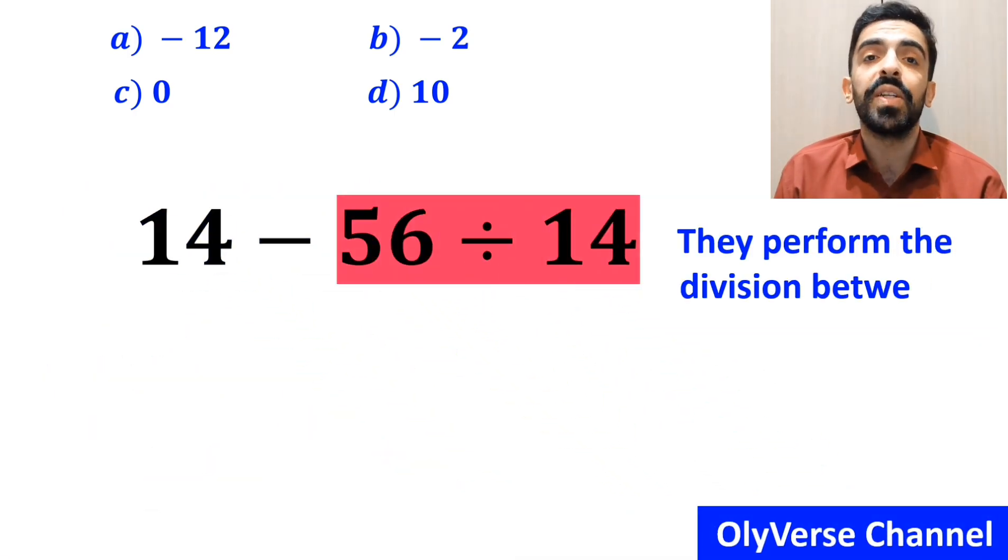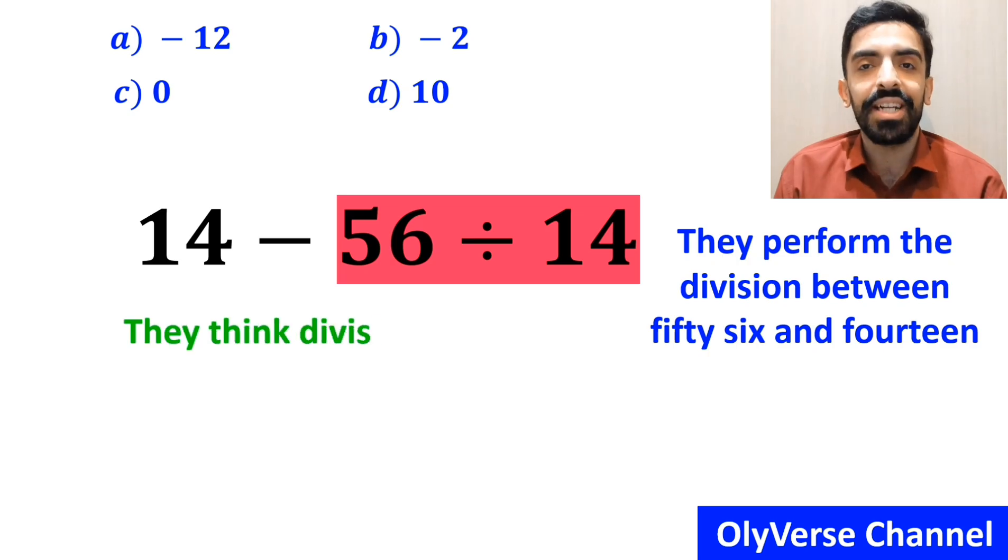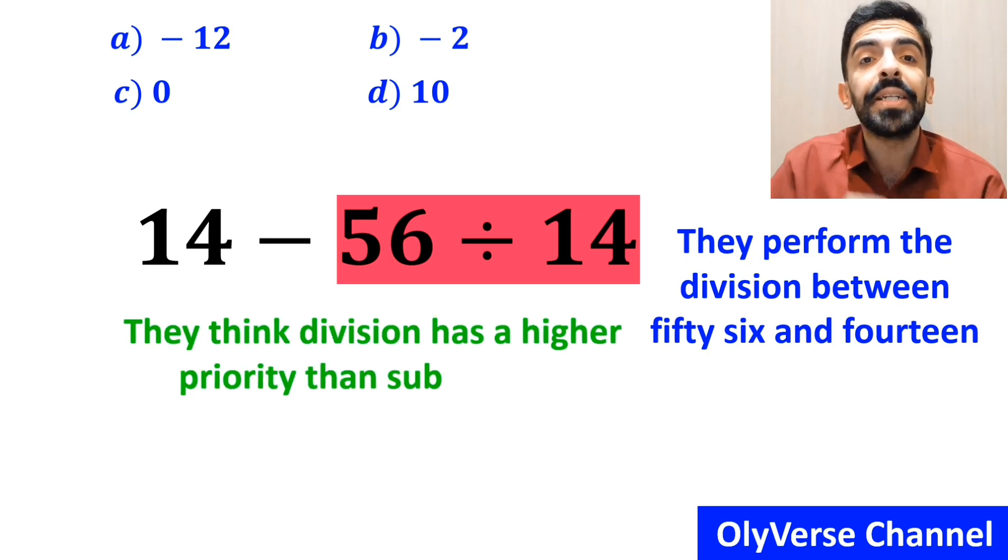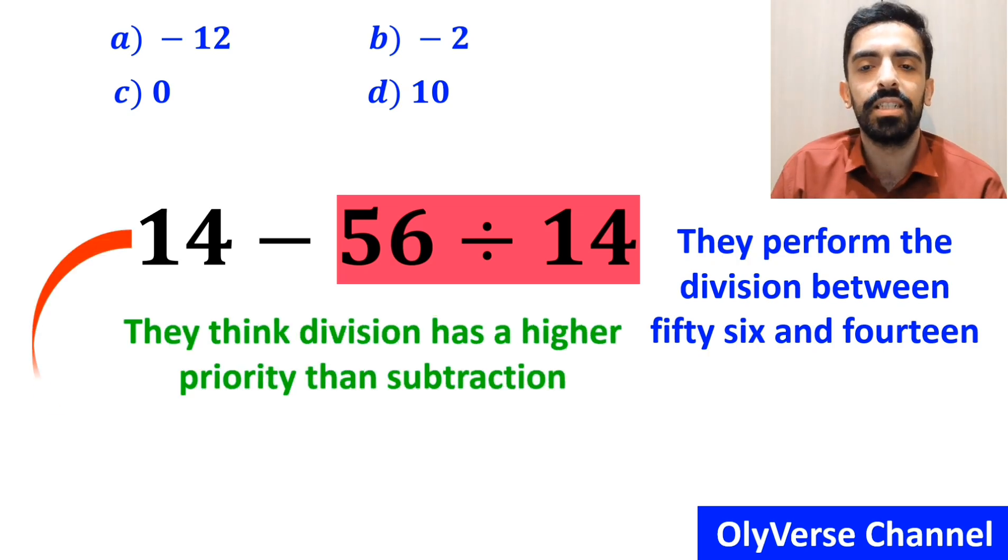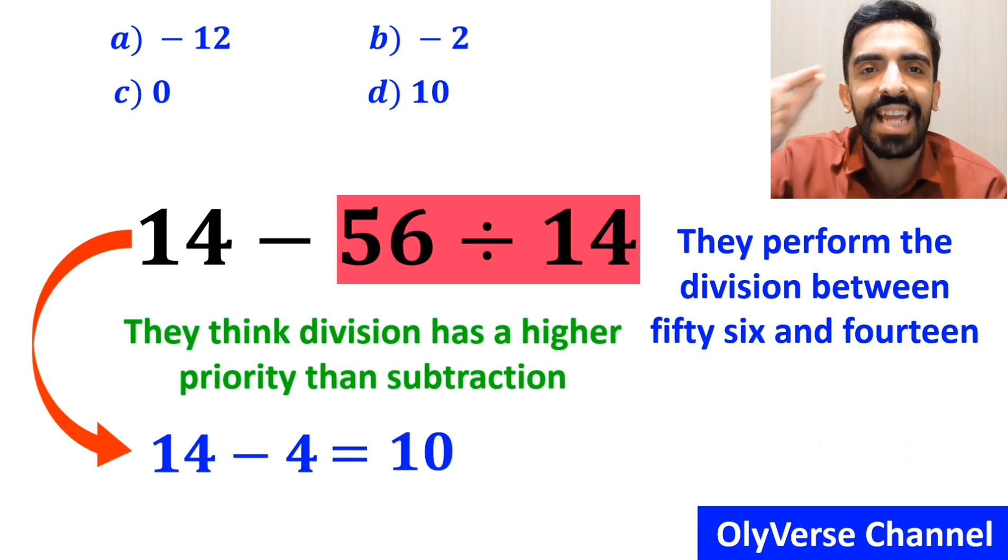In the final step, they perform the division between 56 and 14, because they think division has a higher priority than subtraction. So, they simplify this expression to 14 minus 4, which ultimately gives them the answer 10.